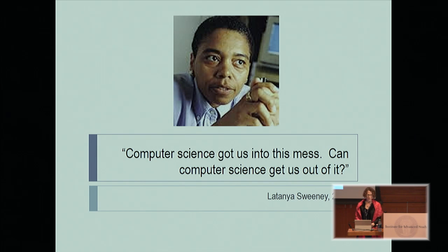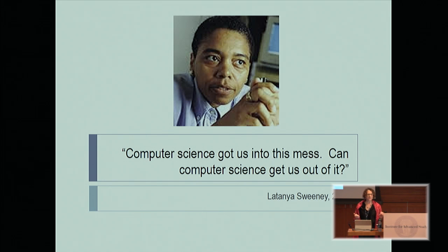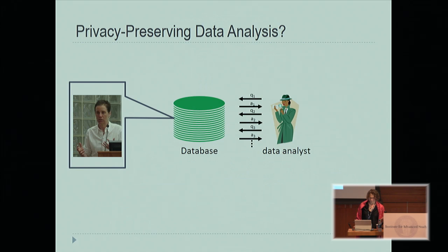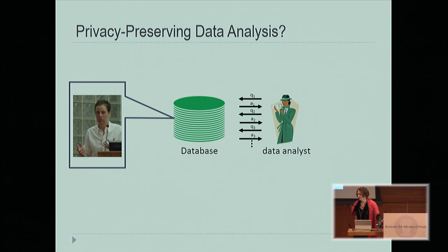Latanya Sweeney, who is a master de-identifier, when she was the CTO of the Federal Trade Commission, said: 'Computer science got us into this mess. Can computer science get us out of it?' So with that in mind, how can we define what it is that we're trying to do? How can we define privacy for the purposes of privacy-preserving data analysis?